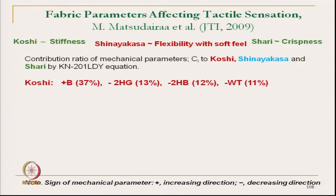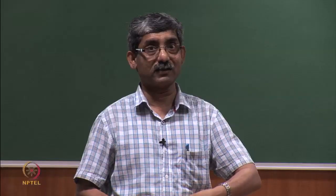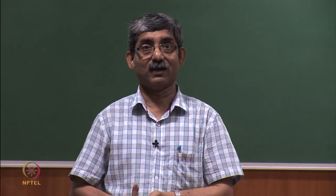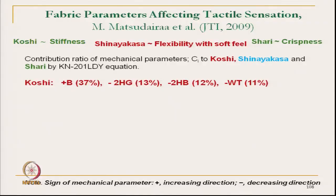Let us see an example with 3 parameters: Koshi, Shinayakasa, and Shari. Koshi reflects stiffness related characteristics. Shinayakasa is flexibility with softness related characteristics, and Shari is crispness. The contribution ratio of mechanical parameters Ci to Koshi, Shinayakasa, and Shari can be computed using this equation.